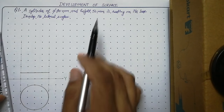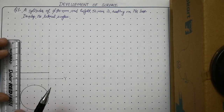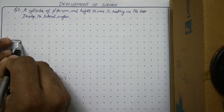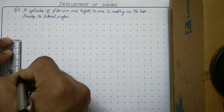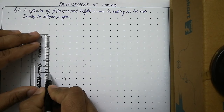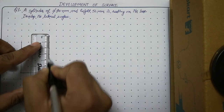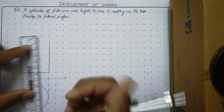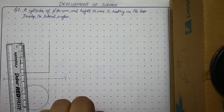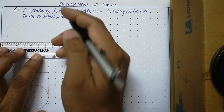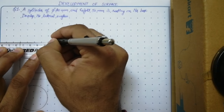The height of the cylinder is mentioned as 50 mm. Complete its front view as a rectangle of height 50 mm by drawing two vertical lines of 50 mm. Now we are ready with the front view of the cylinder.